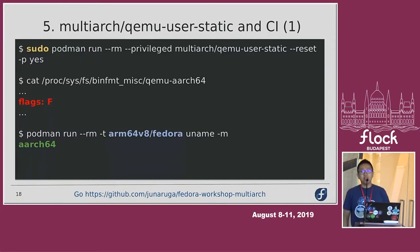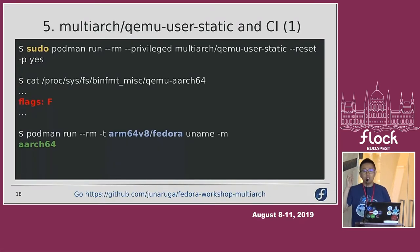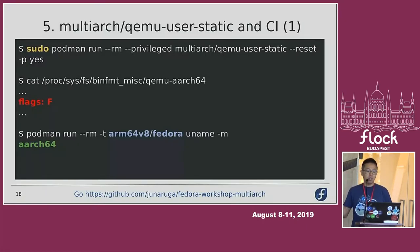Now we are at the fifth step: multi-arc QEMU user static image and CI. The example shows running the multi-arc QEMU user static image with options using the Podman command. That running image installs binfmt_misc files with flag F, the same condition as before. After that, we can run arc-specific containers correctly.